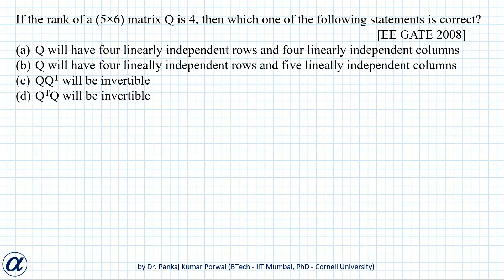In this question, we are given that rank of a 5 by 6 matrix Q is 4. We know that rank of a matrix equals the number of linearly independent rows and number of linearly independent columns. And because rank of this matrix is 4, Q should have 4 linearly independent rows and 4 linearly independent columns.